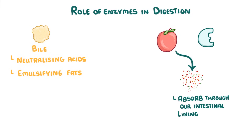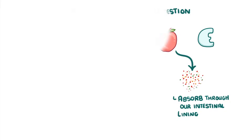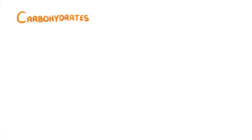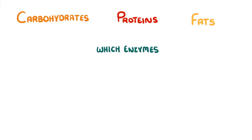Now, the three main groups of nutrients that we're going to have to break down are carbohydrates, proteins and fats. And for the sake of exams, you need to know which enzymes are responsible for breaking each of these groups down and which products they're going to be broken down into.